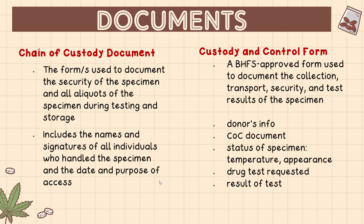In drug testing, there should be proper documentation. There are two forms: the chain of custody document and the custody and control form. The chain of custody document refers to procedures that account for each specimen by tracking its handling and storage — from point of collection to final disposal. All persons involved must have their names and signatures recorded, along with the date and purpose of access.